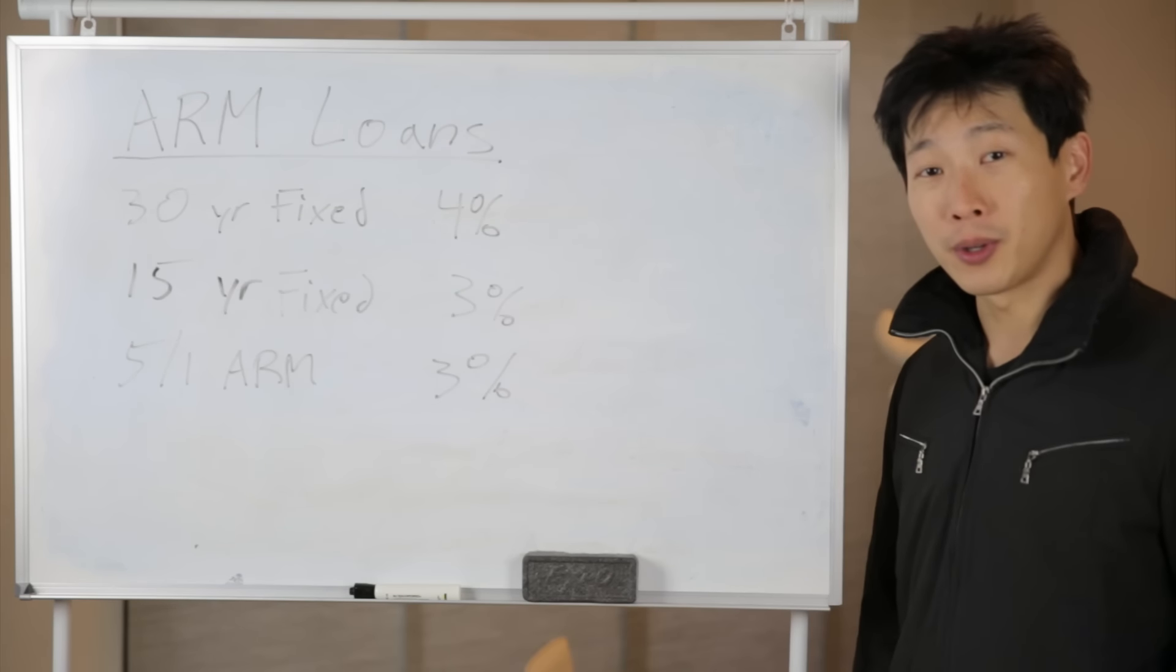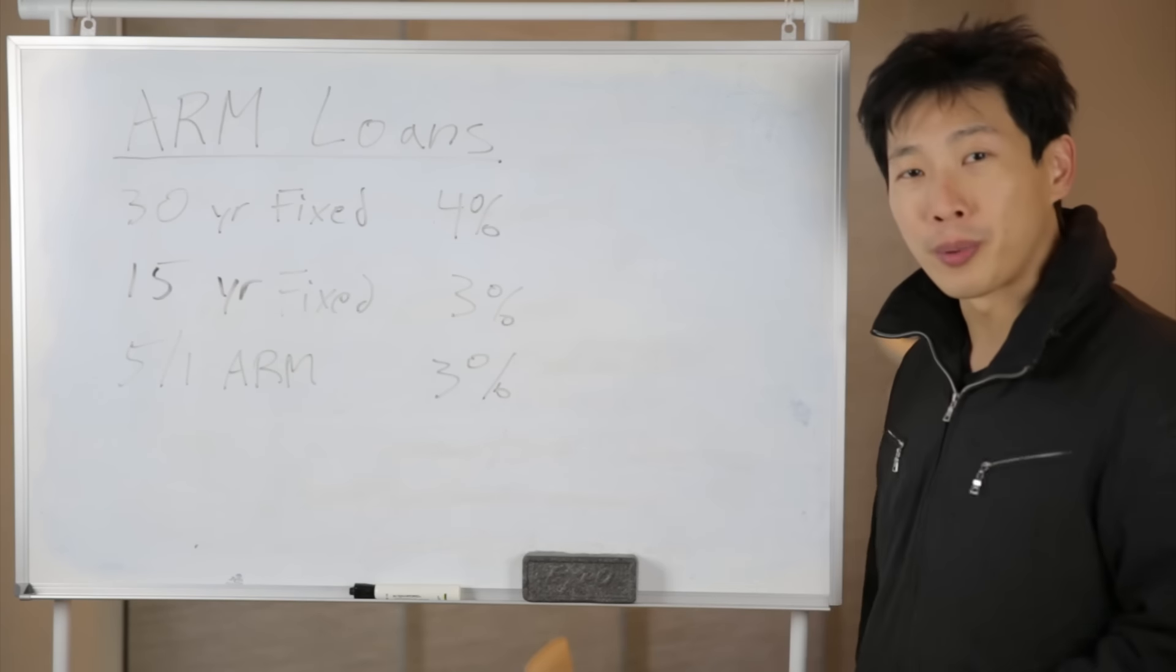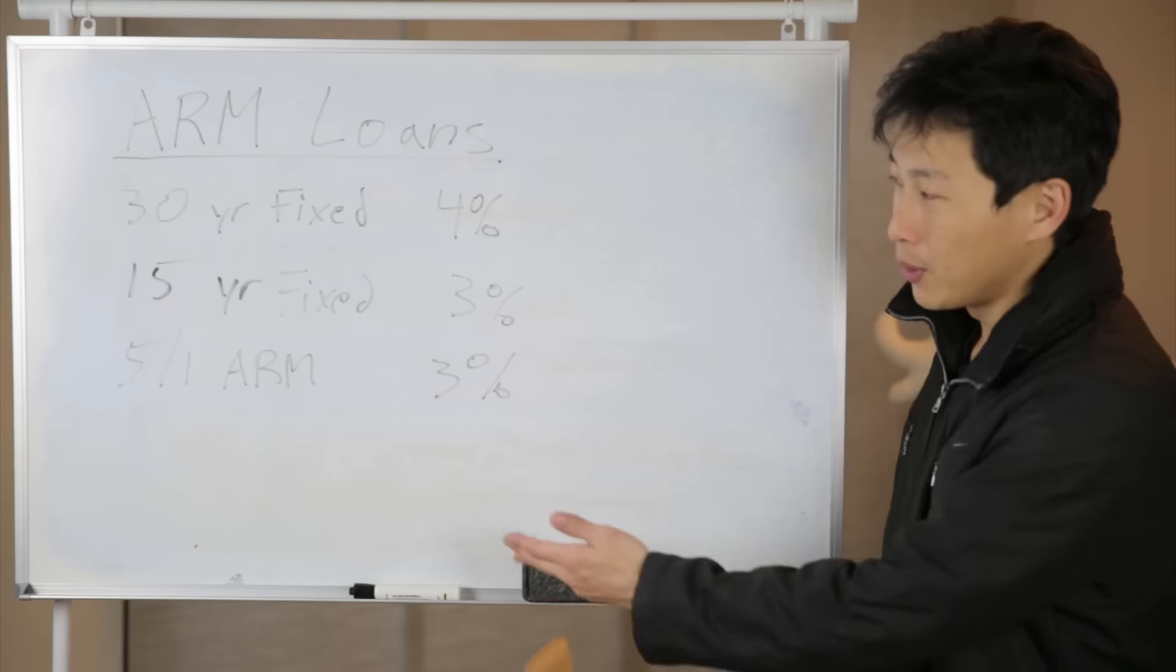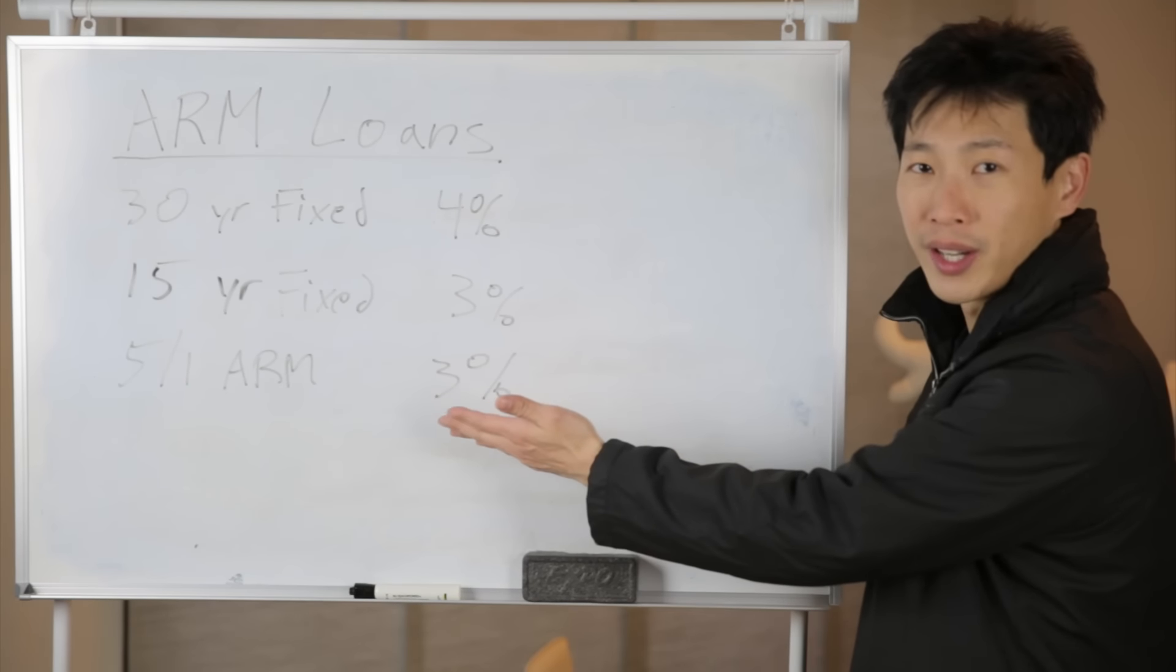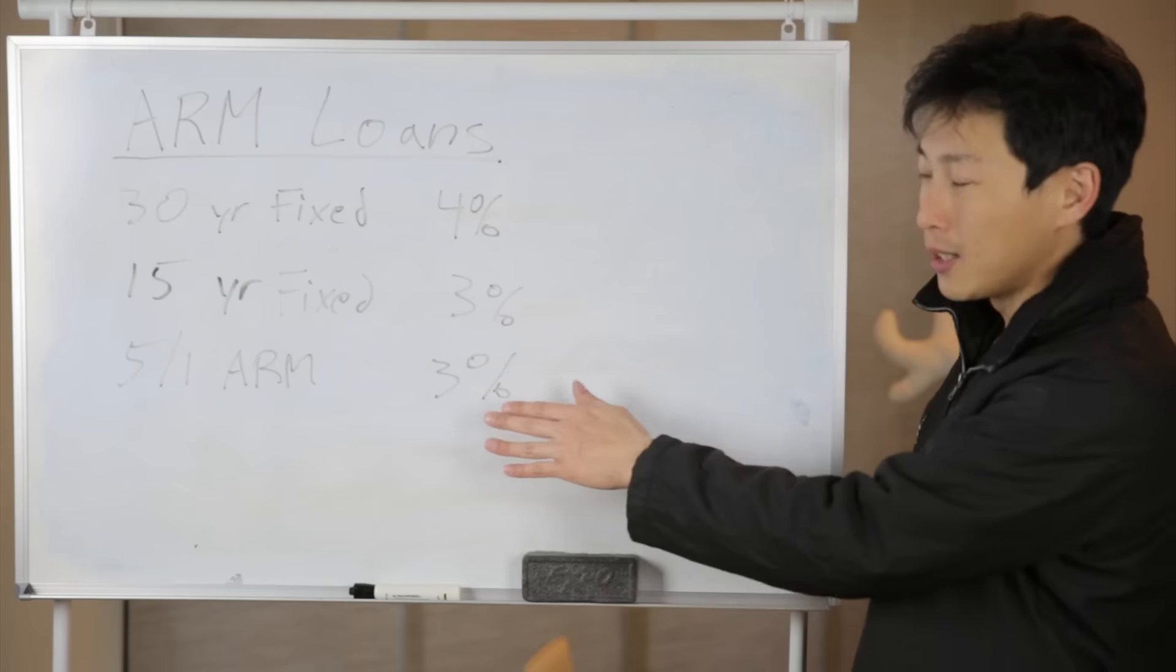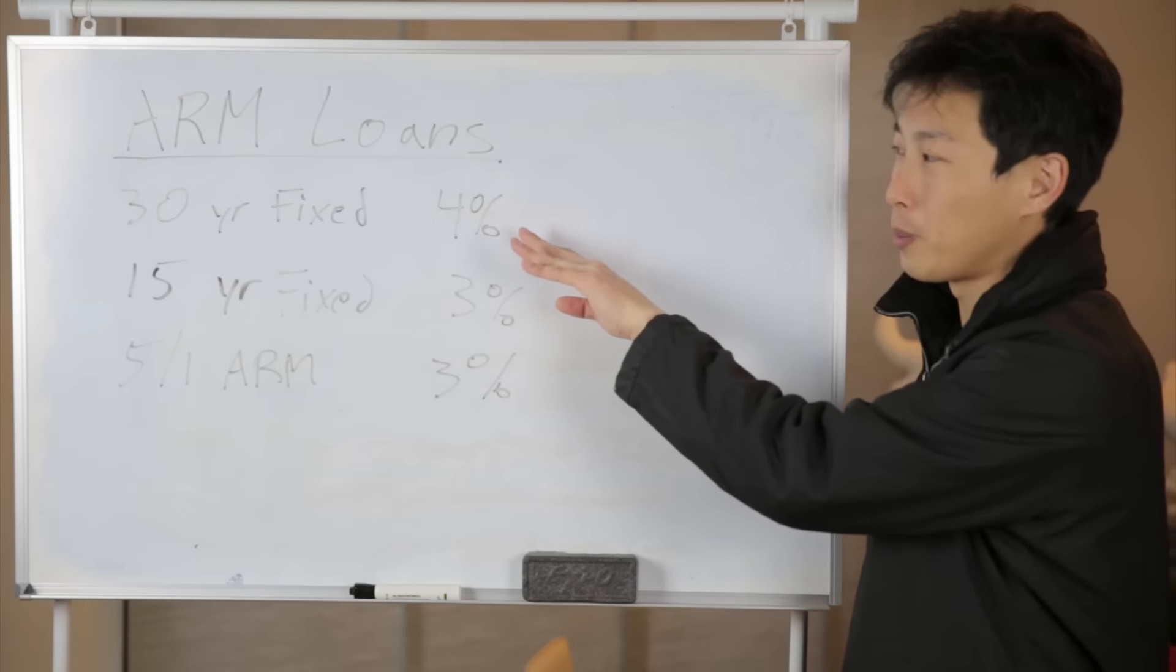It's 2017 right now and your typical mortgage rates are as follows. 30-year fixed rate is around 4%. Right now, 15-year fixed rate is 3%. And if you get a 5-year fixed rate and then after that it adjusts, which is called an ARM adjustable rate mortgage, it's also about 3%.